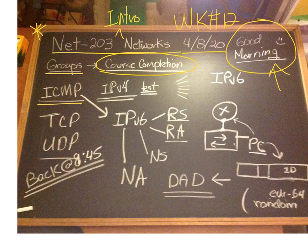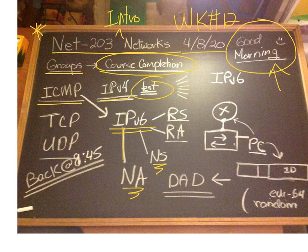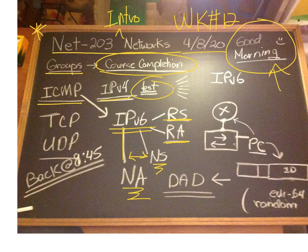We talked about ICMP pinging and testing. We looked at pings and trace routes, and we talked about a little more sophisticated topics in IP version 6: neighbor solicitation, neighbor advertisement — these are devices talking to each other — and then router advertisement and router solicitation.